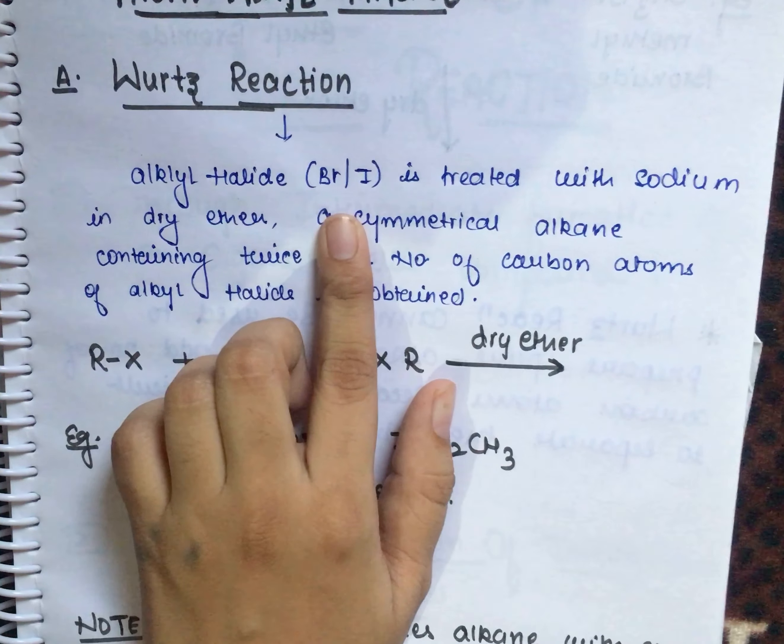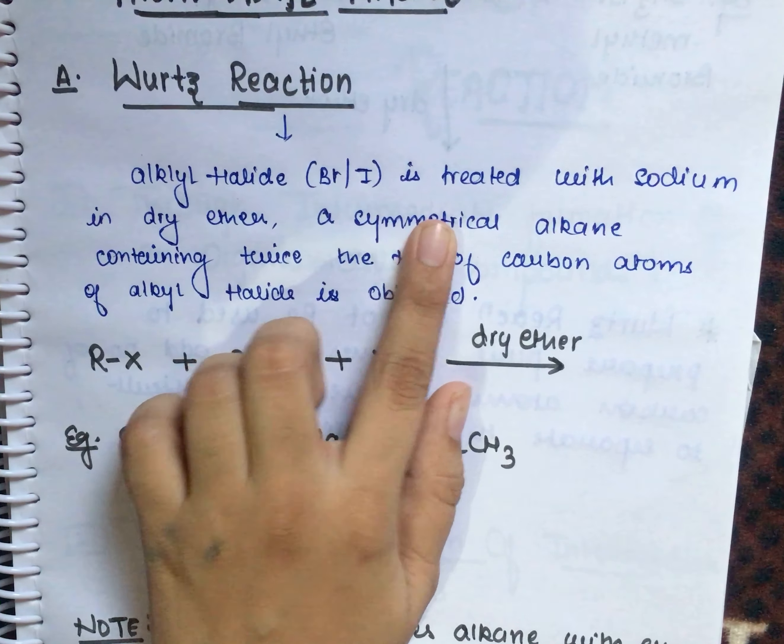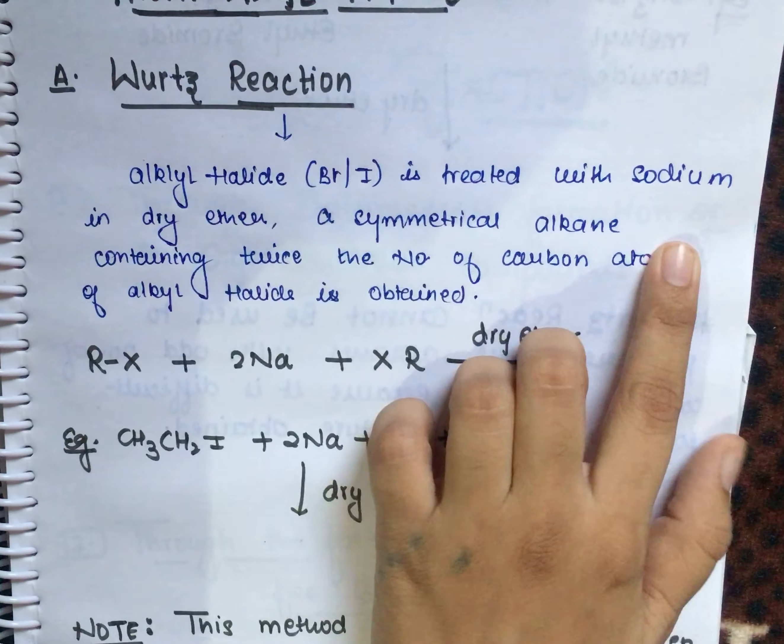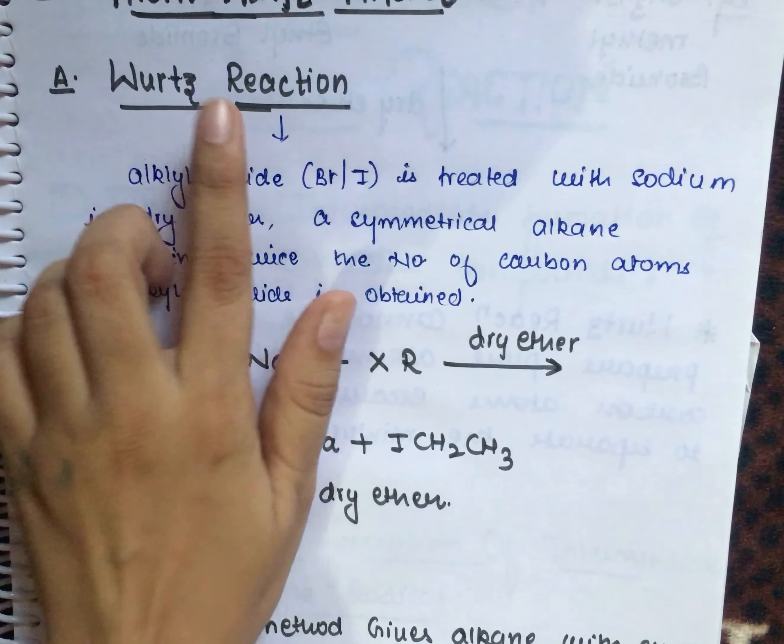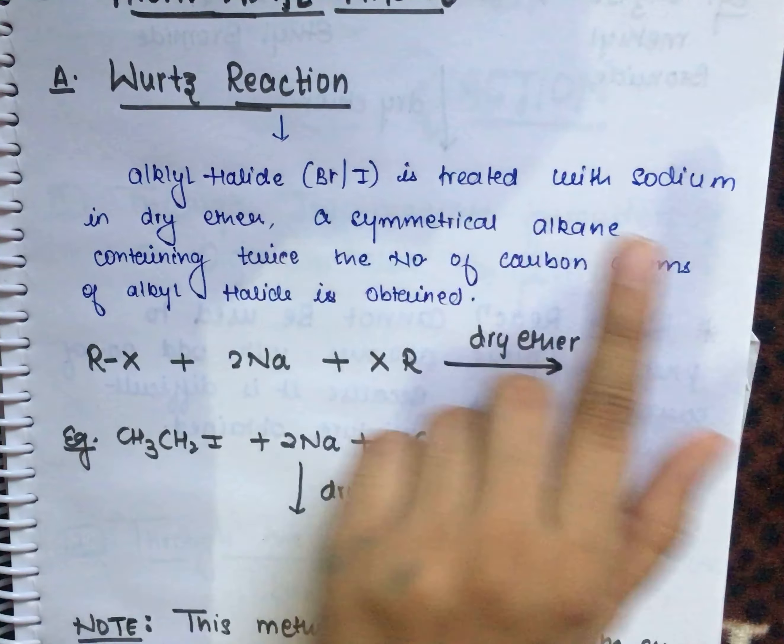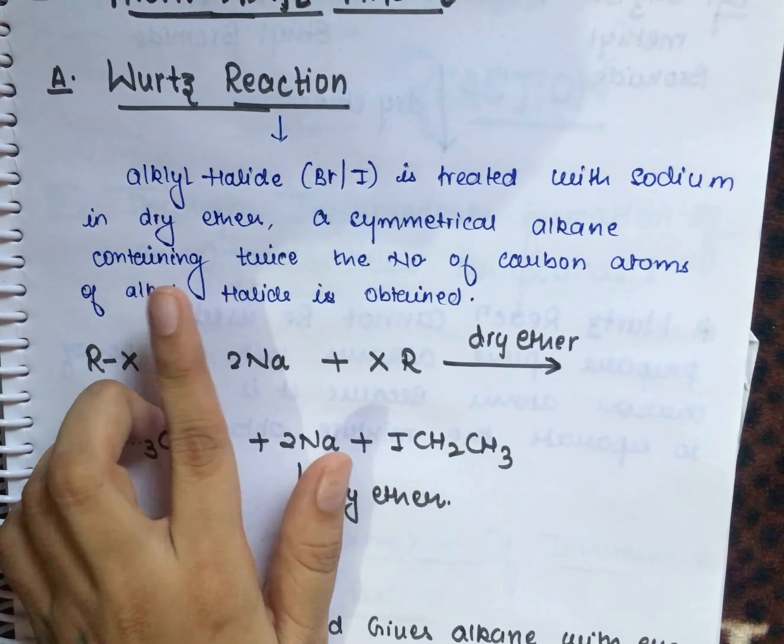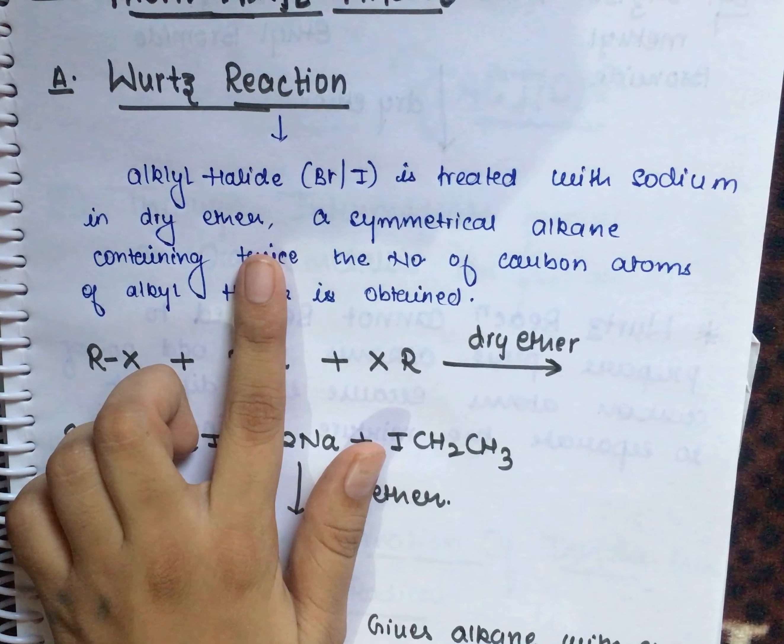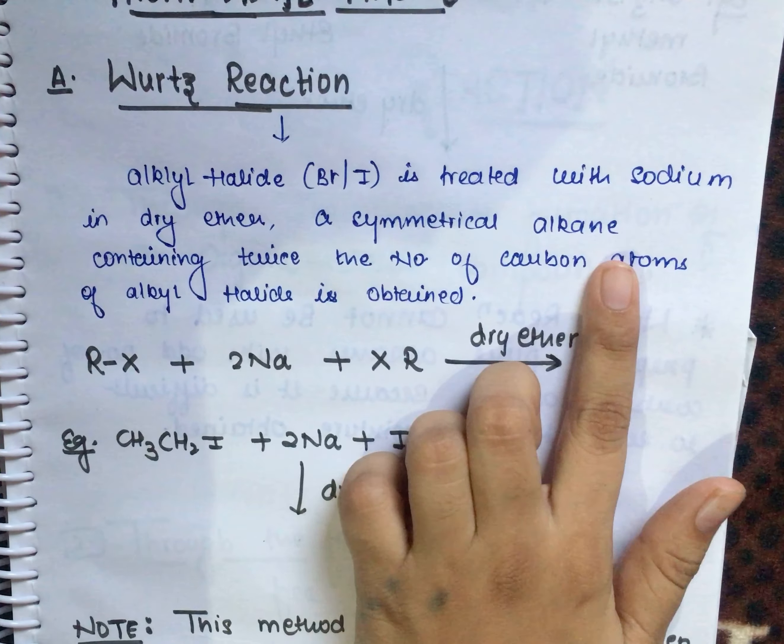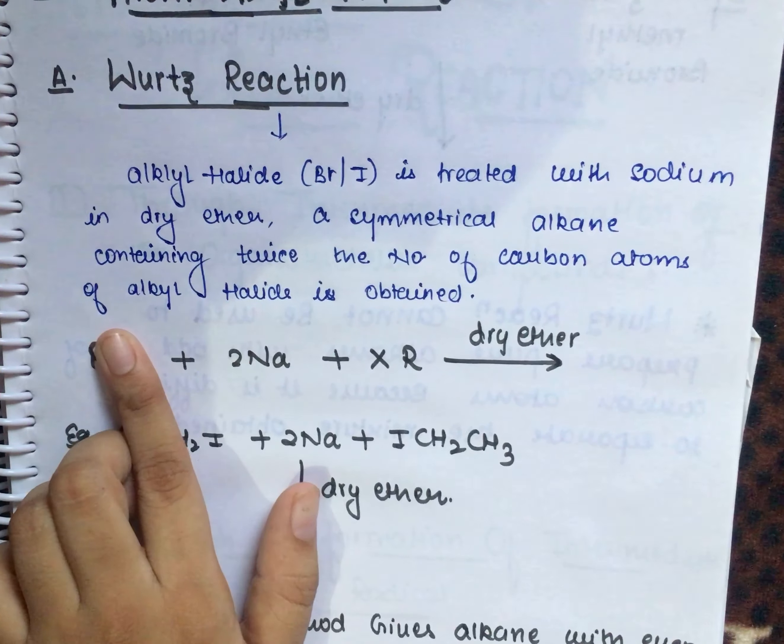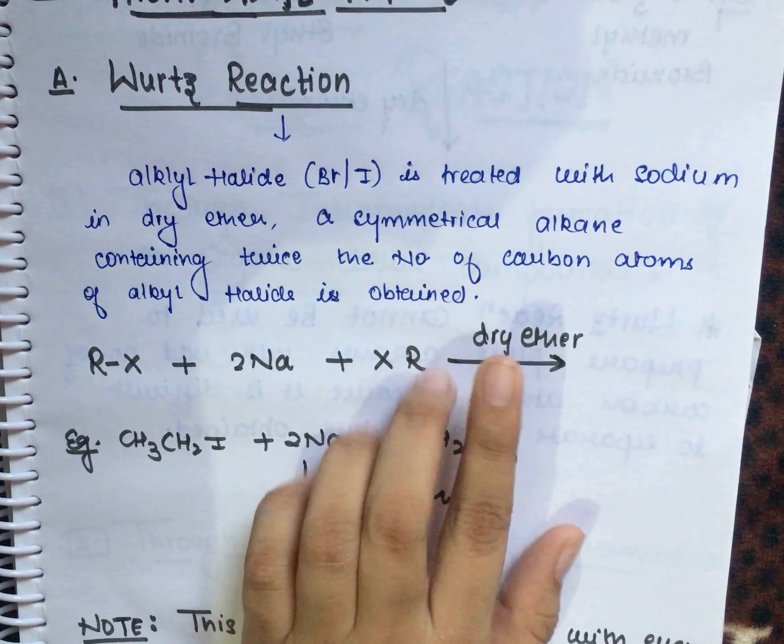Alkyl halide is treated with sodium metal in the presence of dry ether, and a symmetrical alkane containing twice the number of carbon atoms of the alkyl halide is obtained.